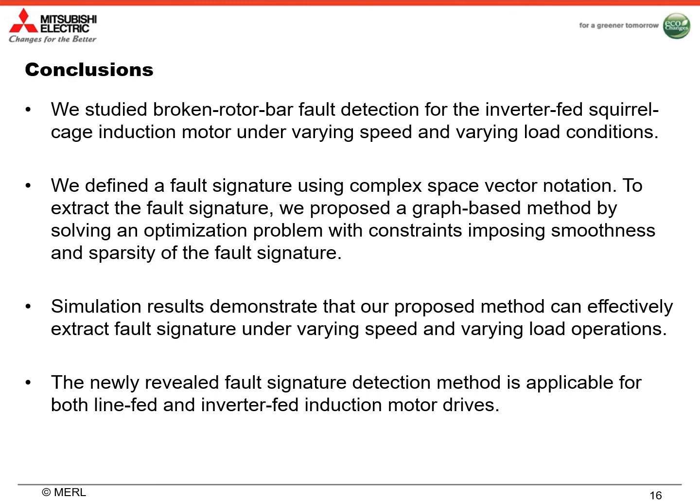Here are our conclusions. We studied broken rotor bar fault detection for the inverter-fed squirrel cage induction motor under varying speed and varying load conditions. We defined a fault signature using complex space vector notation. To extract the fault signature, we proposed a graph-based method by solving an optimization problem with constraints imposing smoothness and sparsity of the fault signature. Simulation results demonstrate that our proposed method can effectively extract fault signature under varying speed and varying load operations. The newly revealed fault signature detection method is applicable for both line-fed and inverter-fed induction motor drives.